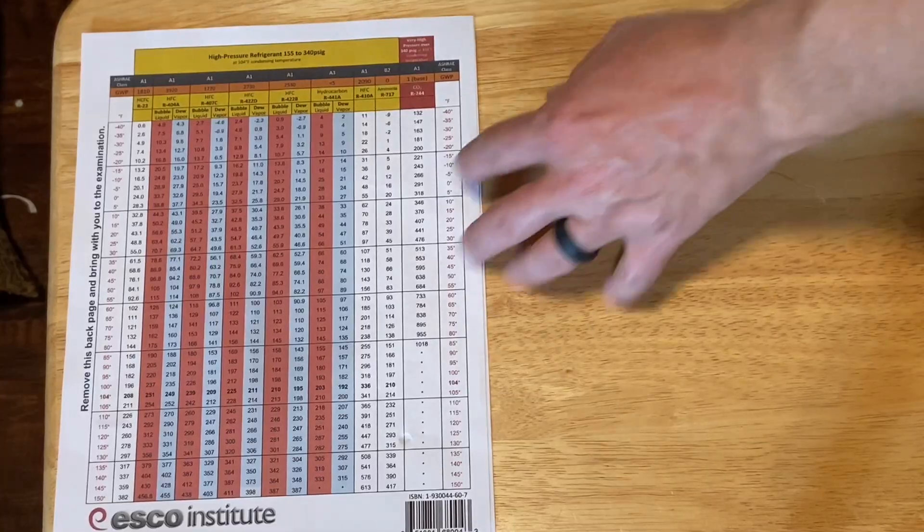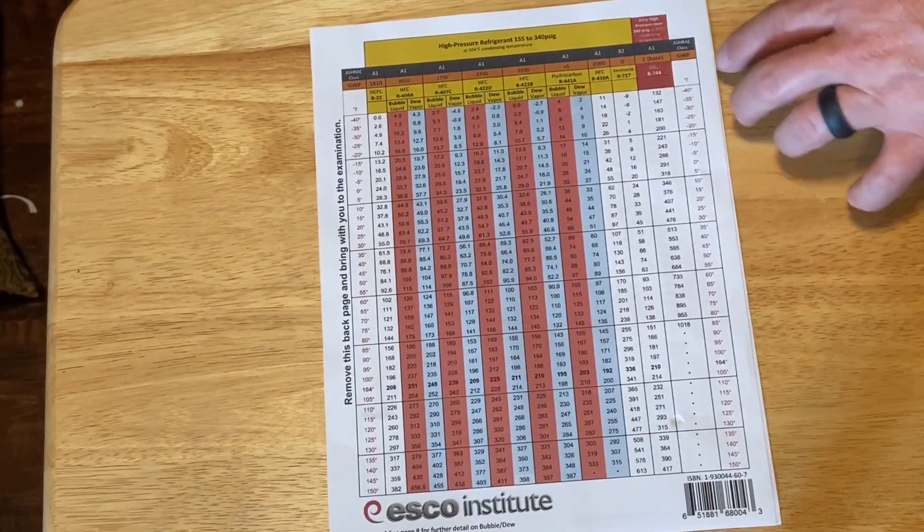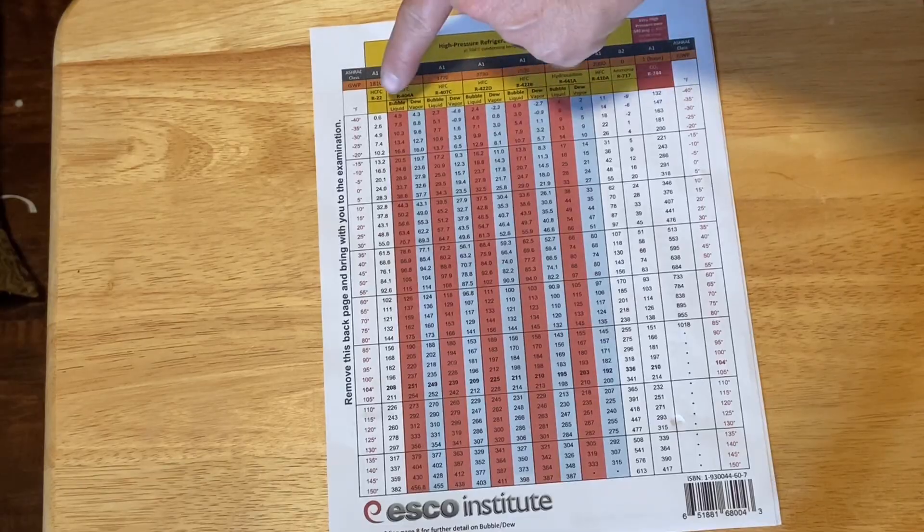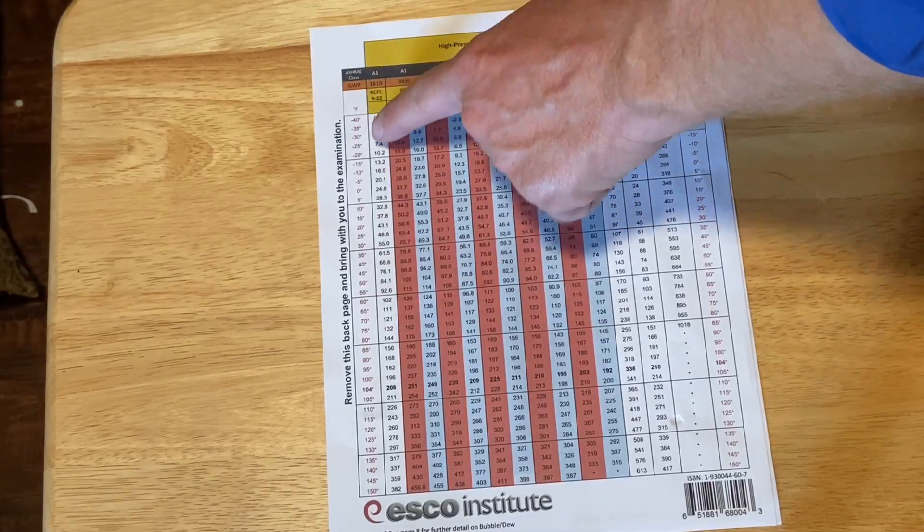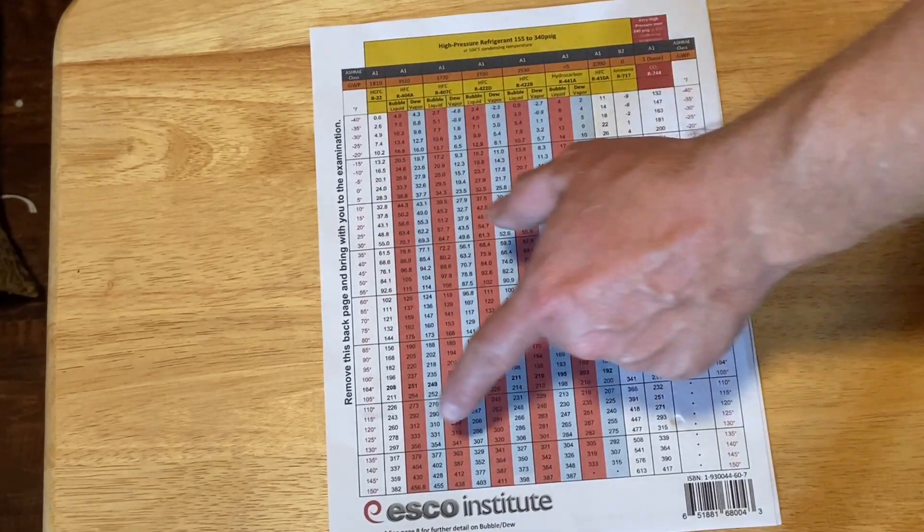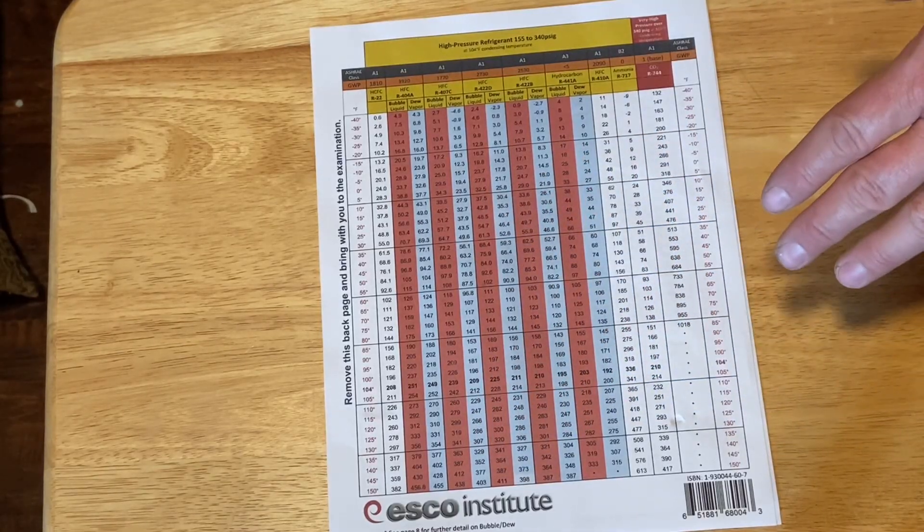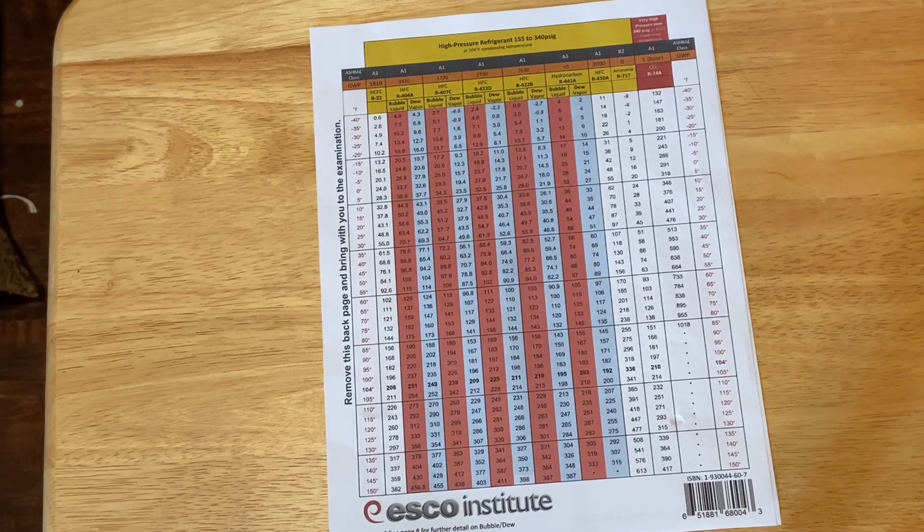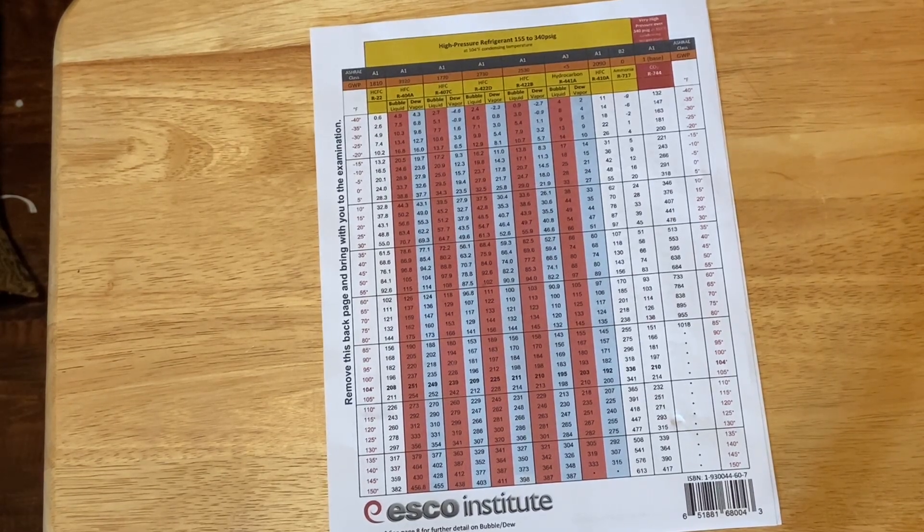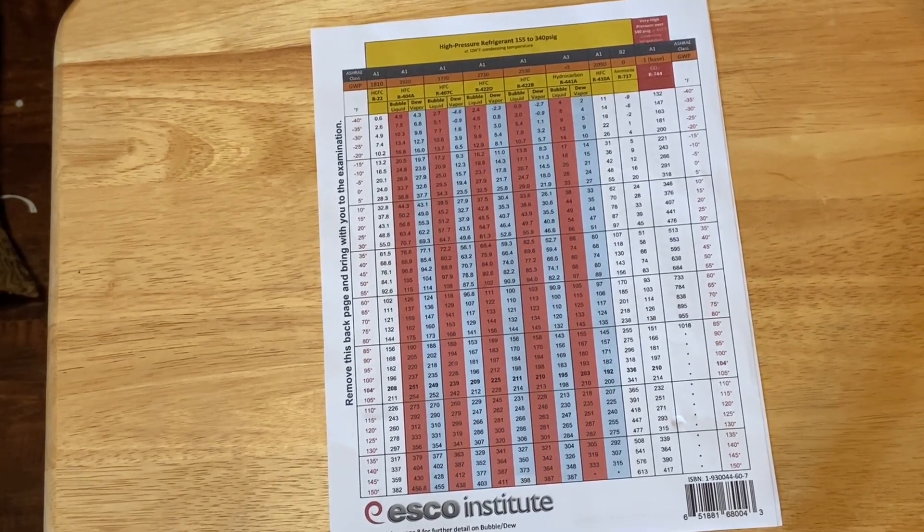But in the EPA test you're gonna have a multi-chart. So you're gonna have a chart that's gonna look something like this. It's gonna have multiple different refrigerants along it and all those convert to a temperature. This particular one is donated by ESCO Institute and it's in the back of their EPA 608 study guide. I do recommend getting that study guide if you're gonna take the EPA test but we'll talk more about that later on.